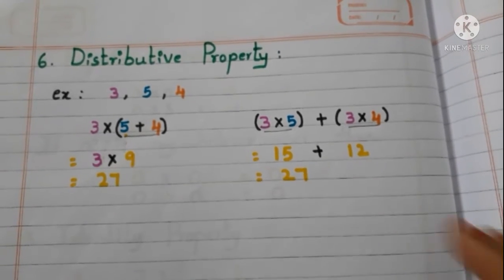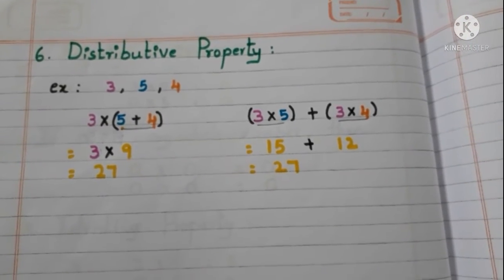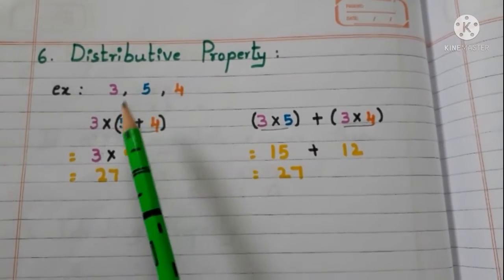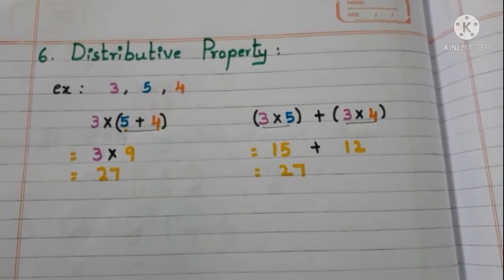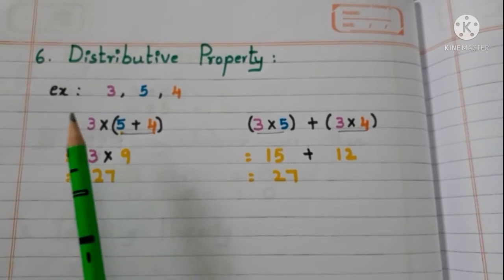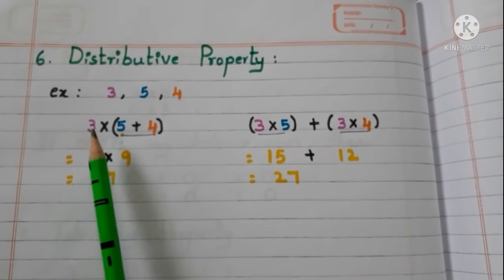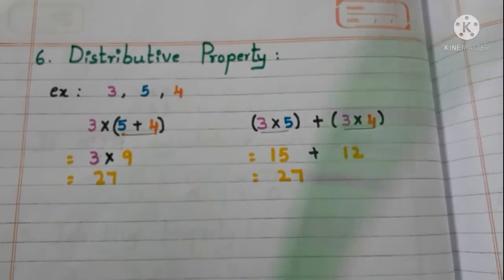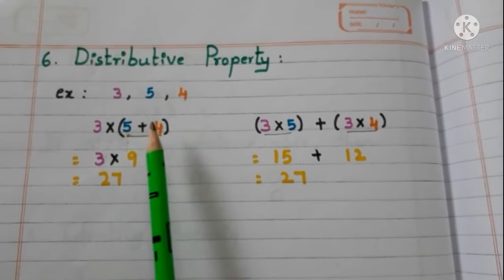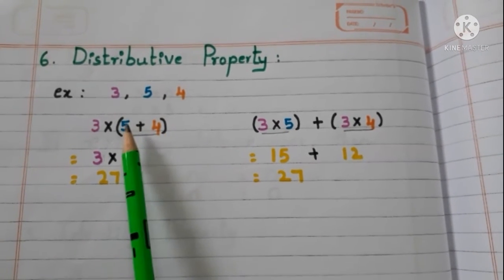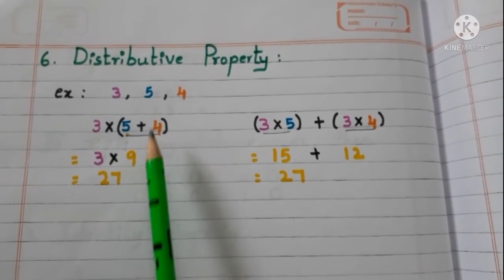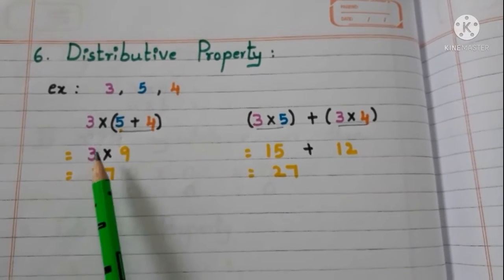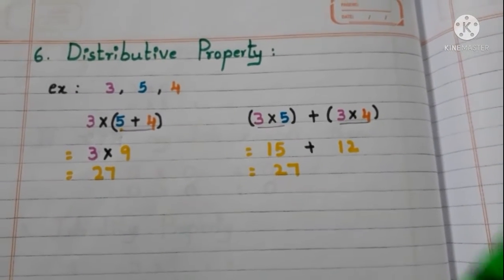Now, distributive property. Let us see with the example. Take 3 whole numbers 3, 5 and 4. First, we take the product of 3 and sum of 5 and 4. First, add 5 and 4. 5 plus 4 is 9. Now, multiply with 3. 3 times 9 are 27.